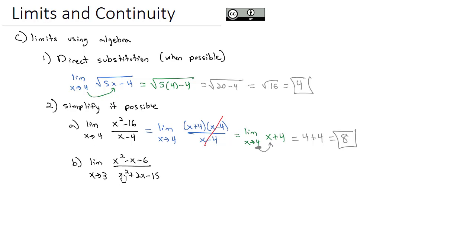Ideally, we'd want to put the 3 in for the x, but 3 squared is 9, and 2 times 3 is 6. 9 plus 6 is 15, and 15 minus 15 is 0. We can't have 0 in the denominator.